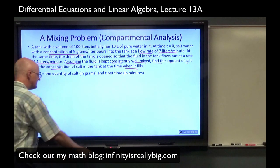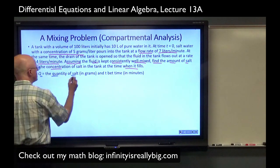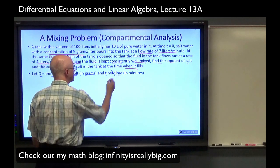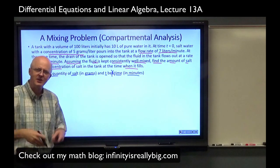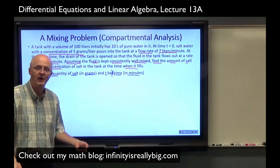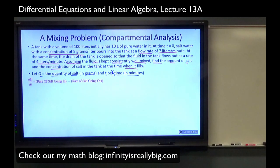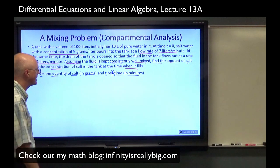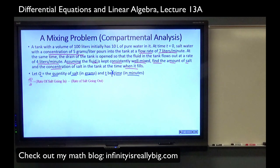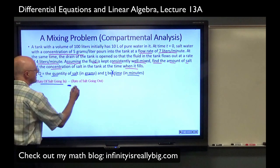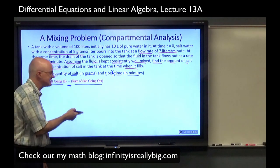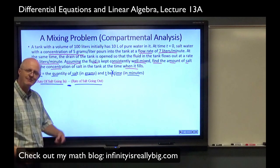Start by defining your variables. Let q be the quantity of salt in grams and let t be time in minutes. q is a function of t. Salt water is going into the tank that initially has pure water, so the amount of salt is going to go up over time. What is the differential equation that models this situation? dq/dt, the rate of change of salt with respect to time, comes from two sources: the rate at which salt is going in minus the rate at which salt is going out.